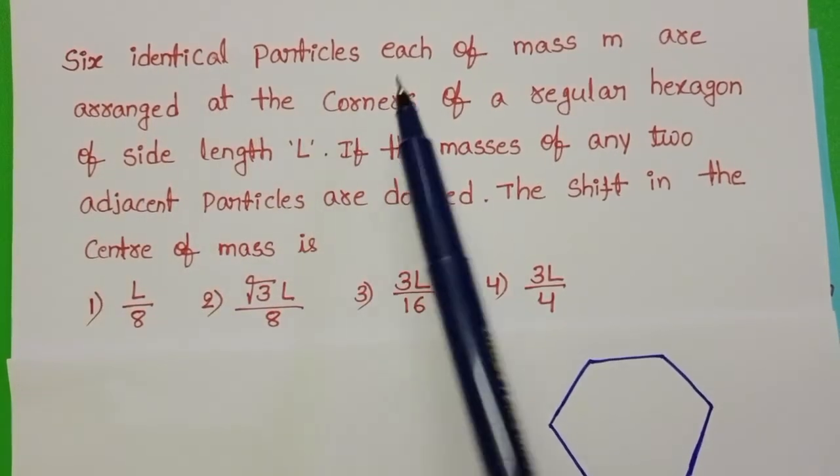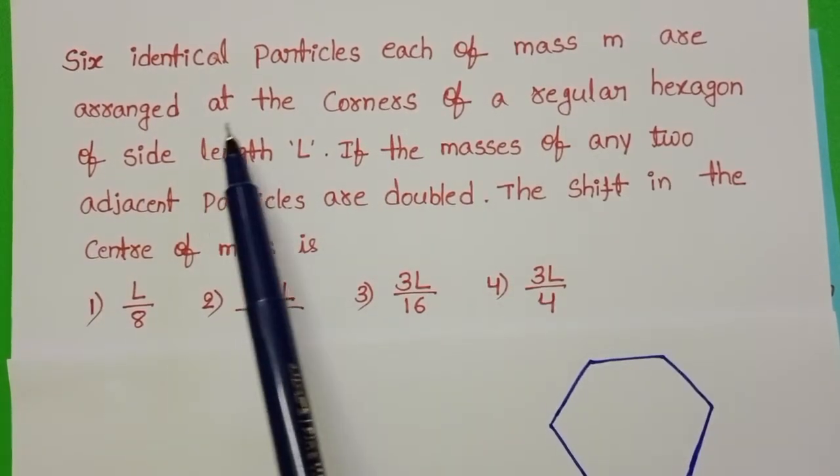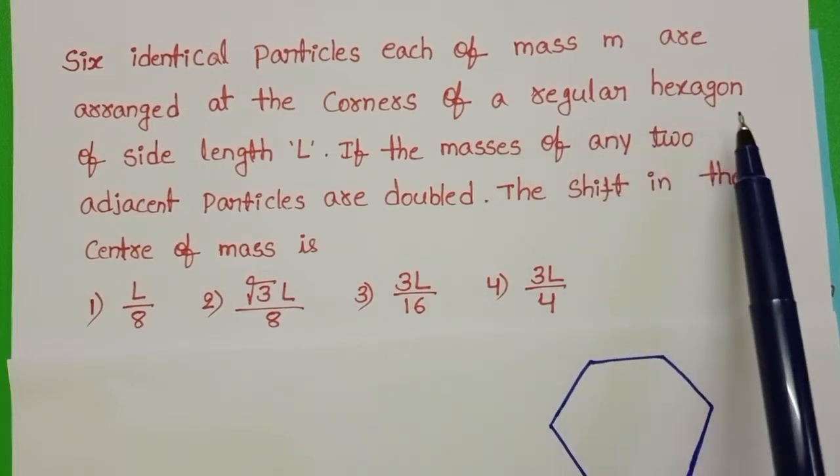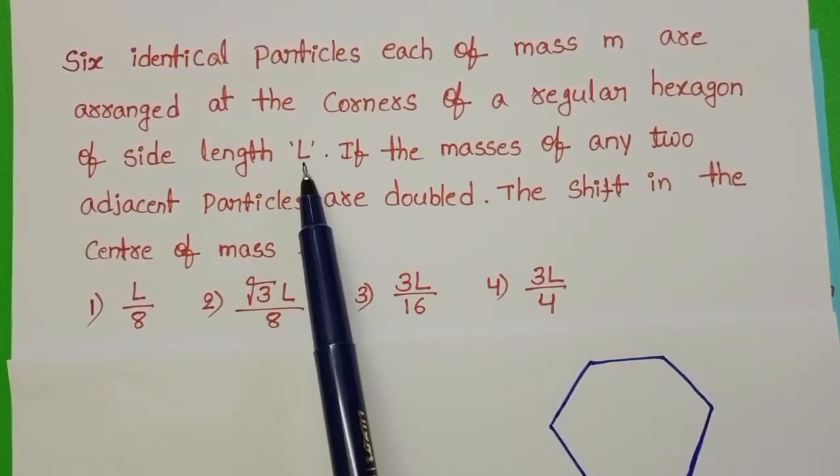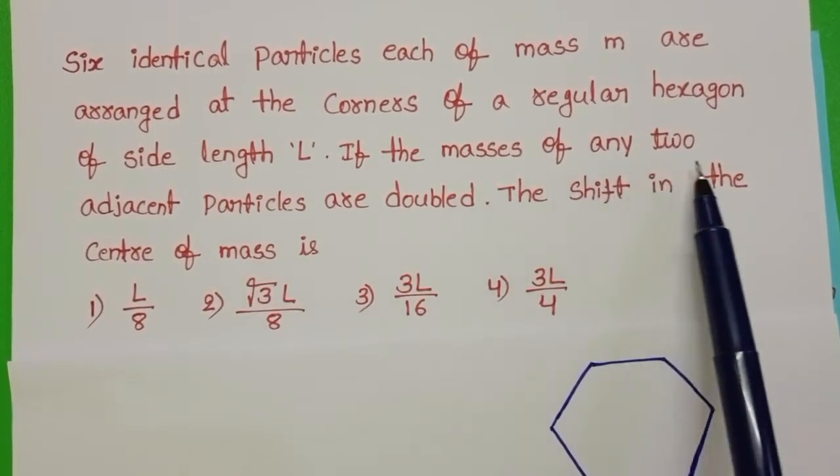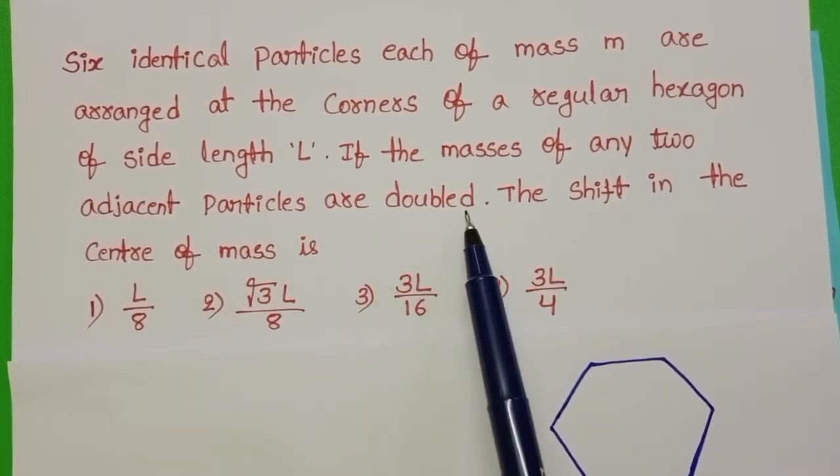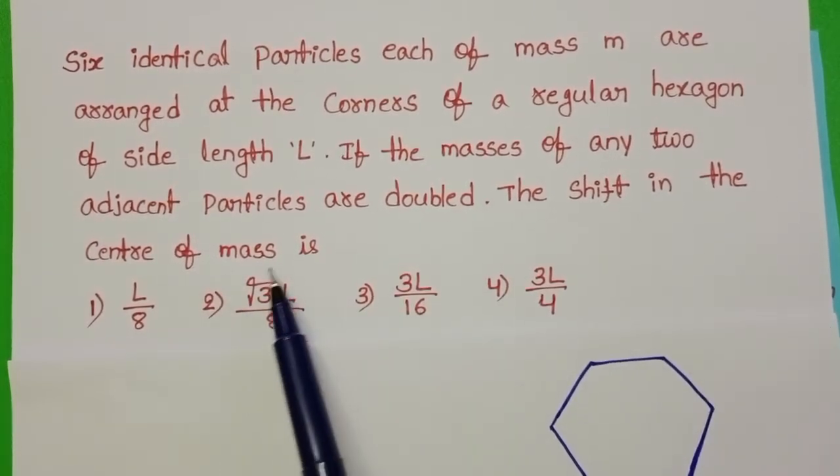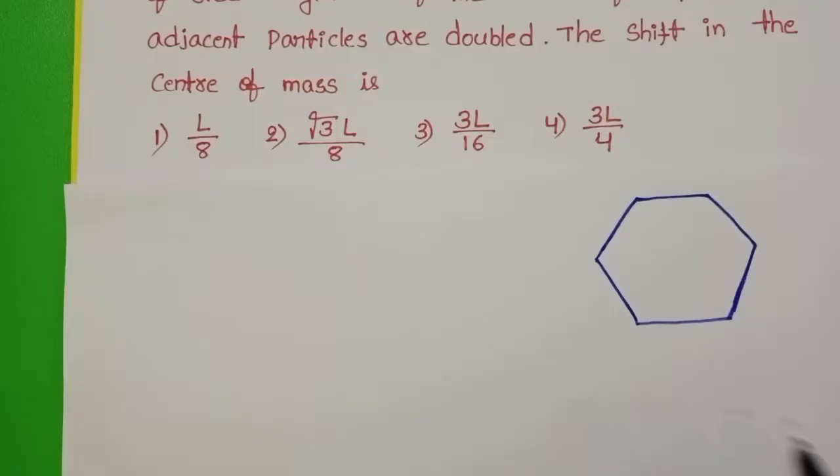Six identical particles each of mass M are arranged at the corners of a regular hexagon of side length L. If the masses of any two adjacent particles are doubled, the shift in the center of mass is the given question.